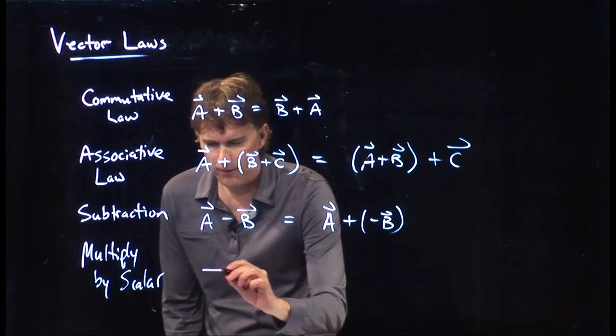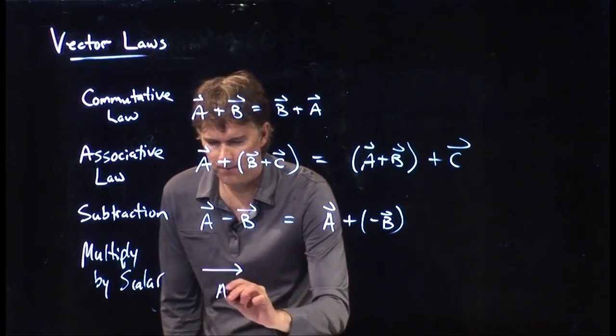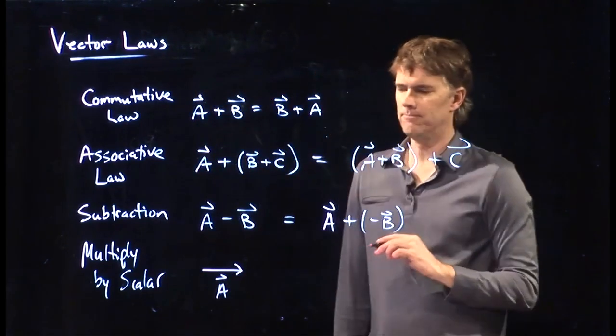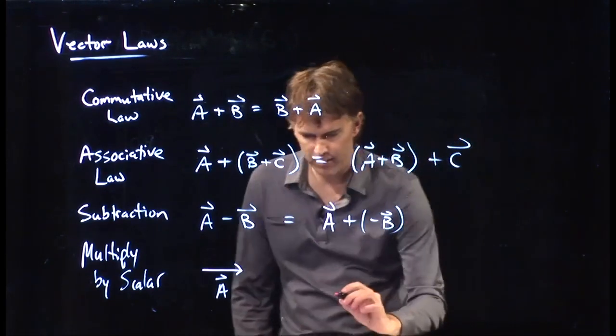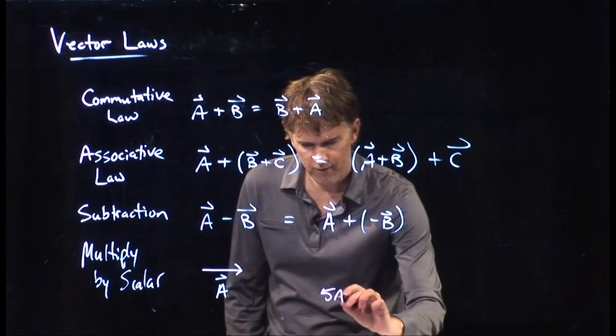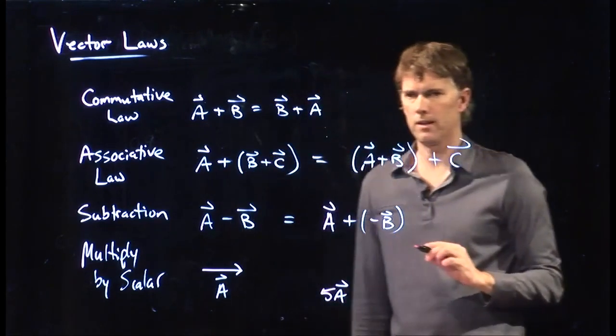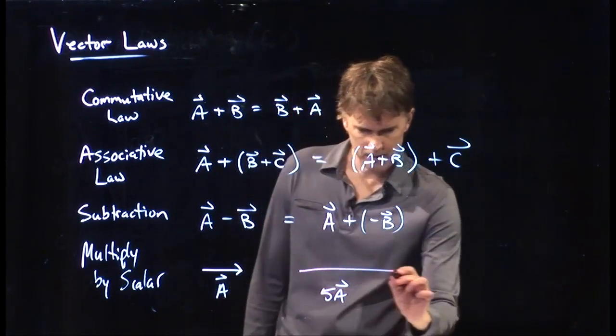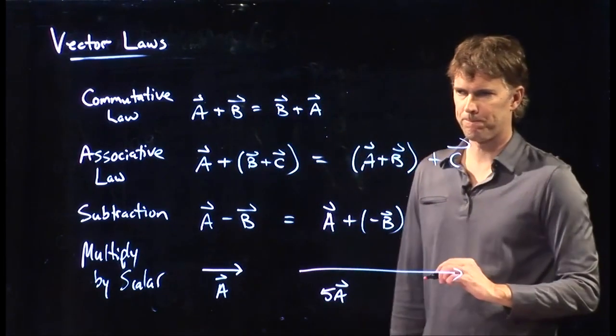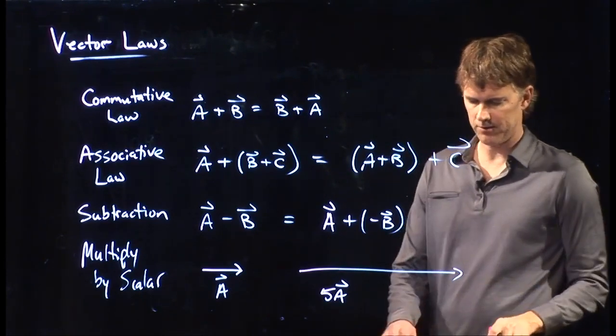Well, if I have a vector A that looks like that, and I multiply it by a number, say 5, what would 5A look like? It is exact same direction, just 5 times as long. That's what a scalar does.